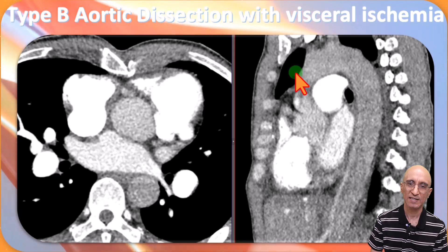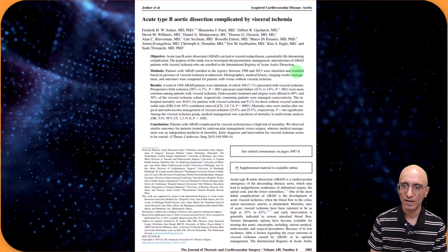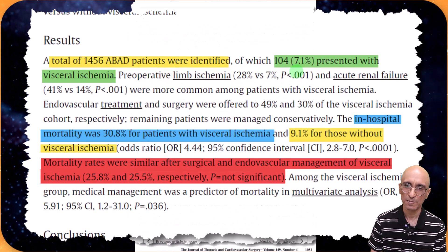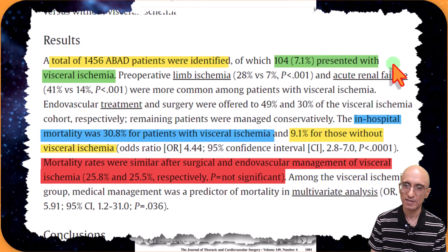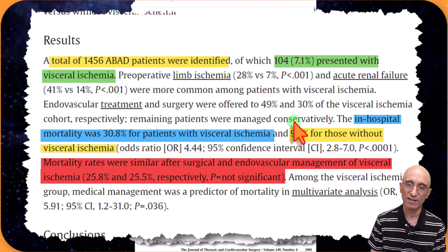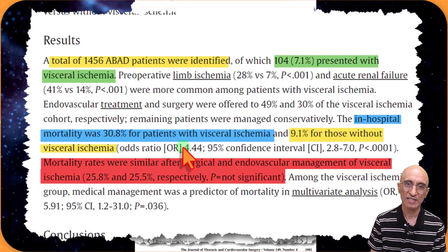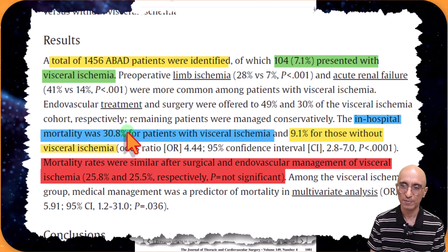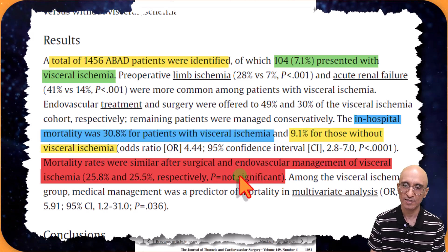Our patient had type B aortic dissection with visceral ischemia. Visceral ischemia in the setting of type B aortic dissection is not a common finding — it can be seen in up to 7% of patients. This is a rather unfortunate complication, as the presence of visceral ischemia increases mortality to almost 30%, compared to less than 10% in patients without visceral ischemia.